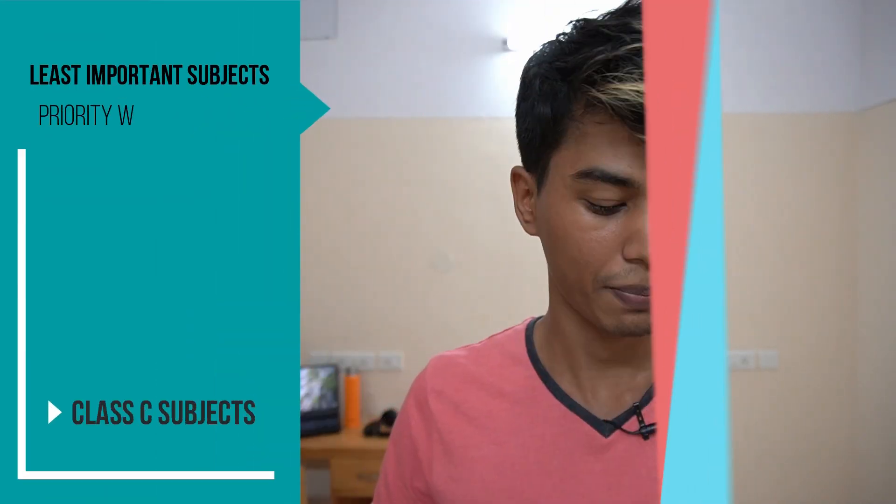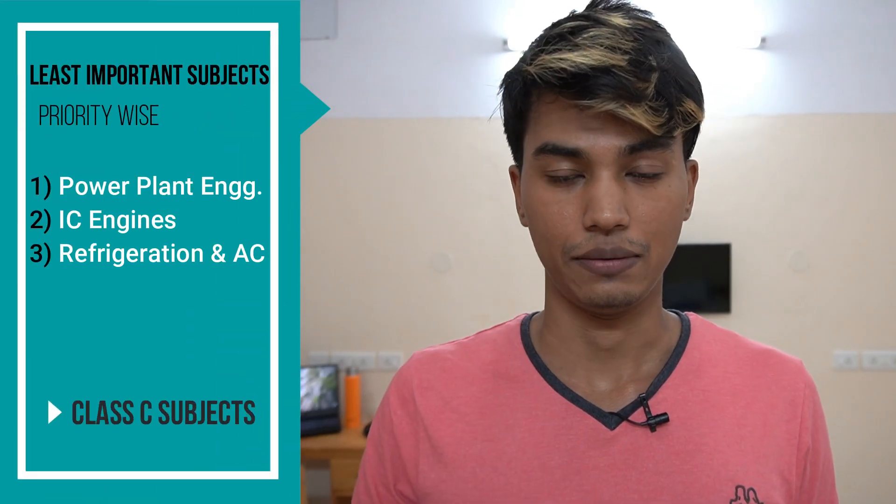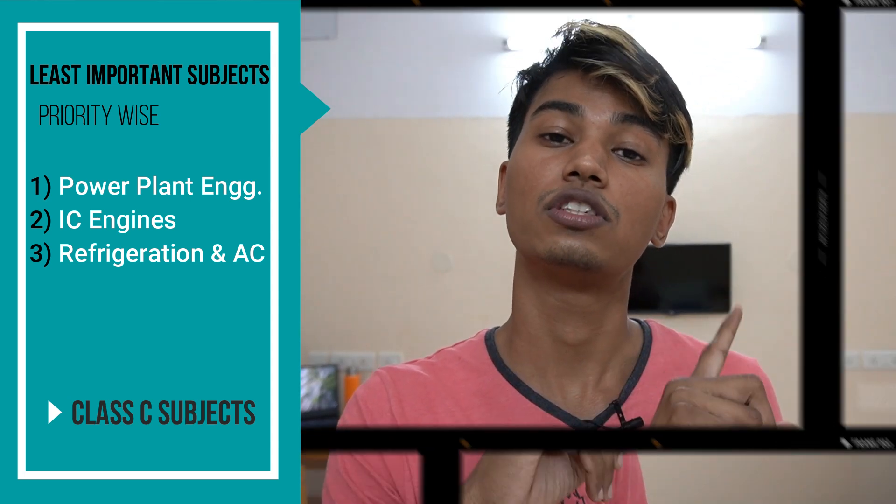Least important subjects are ones you'll cover at the end. From past papers I've seen, there were no questions from these subjects. Understand what you do not need to study as much as what you do need to study. Least important: Power Plant Engineering, IC Engines, and RAC. RAC will be important for the B006 RAC paper but not for the general mechanical paper — just have a brief idea about it.